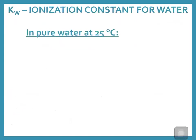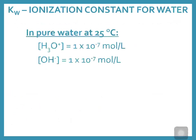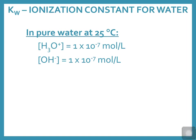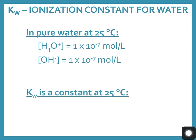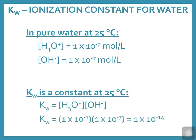For pure water at 25°C, the concentration of hydronium ion is 1×10⁻⁷ mol/L, and hydroxide is the same. Notice that the exponent 7 corresponds to neutral on our pH scale. The ion product constant for water at 25°C is the concentration of hydronium times concentration of hydroxide: 1.1×10⁻⁷ squared, which equals 1×10⁻¹⁴.